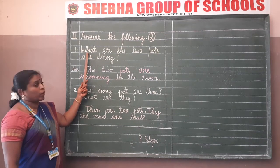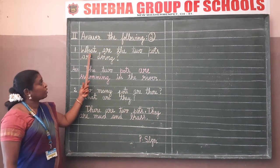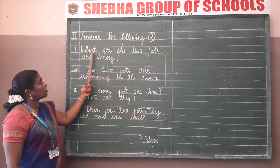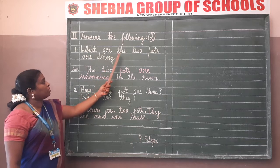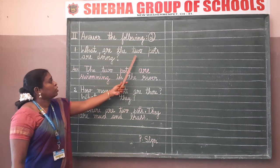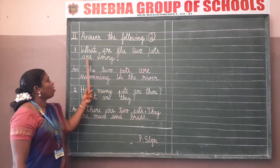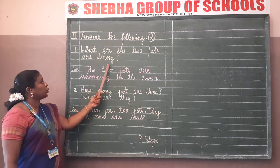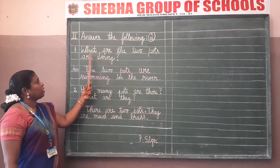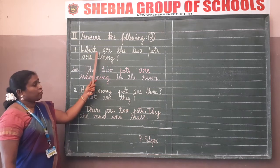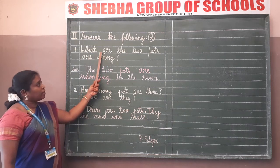The question is: 'What are the two pots doing?' Keep finger space between each word. See, I have kept finger space - how I have kept the finger space.